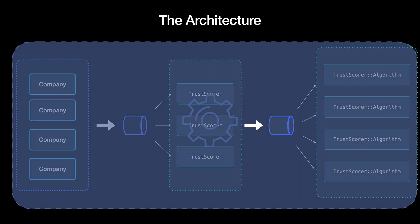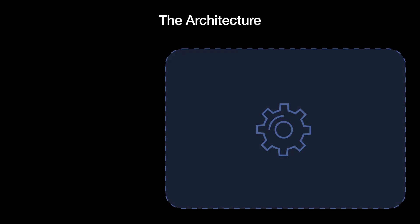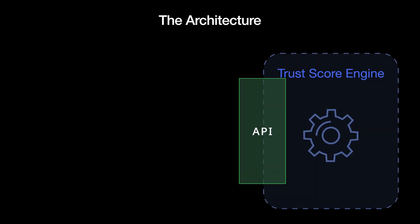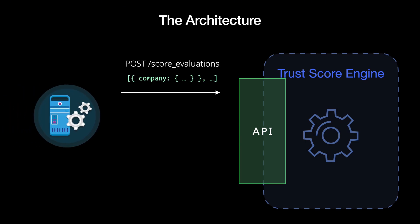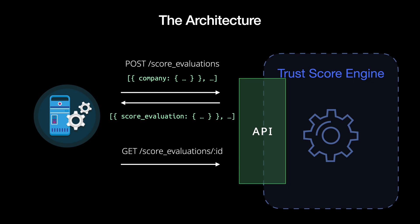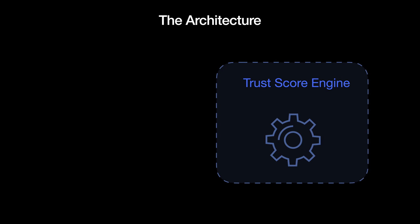Let's talk about the entry point of our engine. If you want to use a separate service, you can communicate between services in many ways. But even if you use other messaging solutions, you will at least have some basic API like this one. An endpoint to create score evaluations receives an array with companies and returns an array of score evaluations with a processing pending status. This other endpoint fetches a score evaluation by ID and returns the entire score evaluation, with data like the company snapshot and the results.